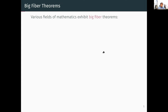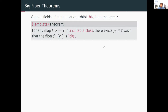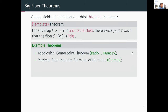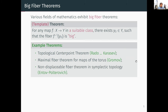When I say 'big fiber theorem,' I mean theorems that suit the following template: for any map in a suitable class of maps, there exists a fiber which is considered 'big,' where the notion of size depends on the context. Three examples: the topological center point theorem going back to Rado, presented here in a version by Karasov; Gromov's maximal fiber theorem for the torus (more algebraic-topological in flavor); and the non-displaceable fiber theorem in symplectic topology due to Entov and Polterovich.